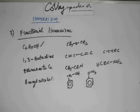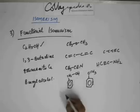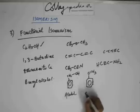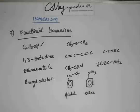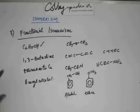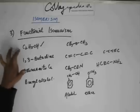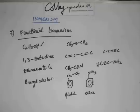This is what you can get. You can get one more functional group or many more functional isomers — this is alcohol, this is ether. There is one more functional group that you can draw in the case of this ring, which you could not draw in the case of an aliphatic or open chain compound.